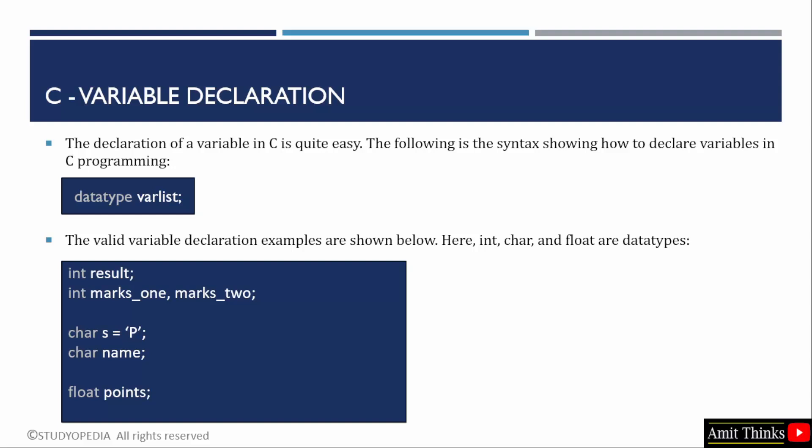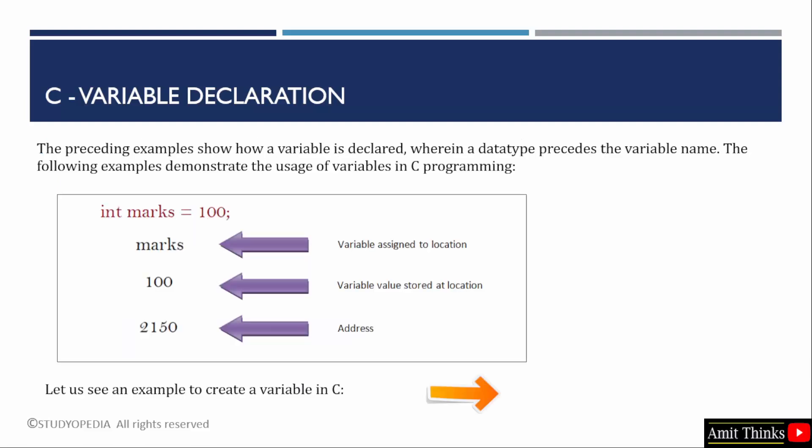These were some examples related to declaring a variable in C. We will now see an example. We just saw how a variable is declared, how a data type precedes the variable name, like int marks. Here, we have shown that if you write int space marks - since it is marks, it is an integer. We have assigned 100 to the marks.